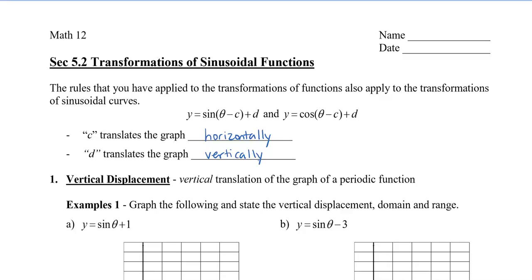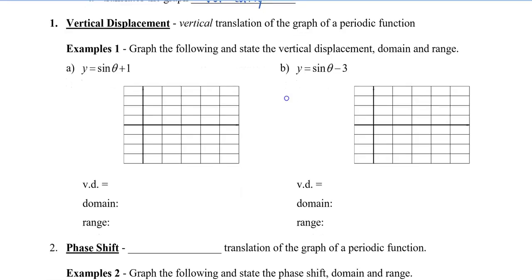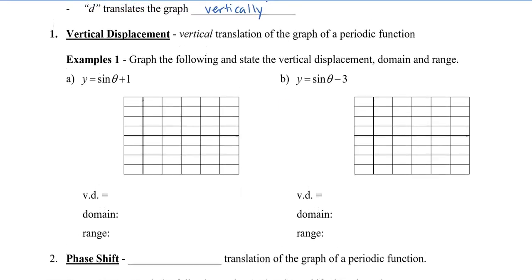In trigonometry, we call the vertical shift a vertical displacement. So let's graph the following, and I want you to tell me what the vertical displacement and domain and range are. I want you to always keep in the back of your mind what the basic sine graph looks like. We have a plus 1 that's not inside the brackets and it's at the very back, so we say that there is a vertical displacement of 1.